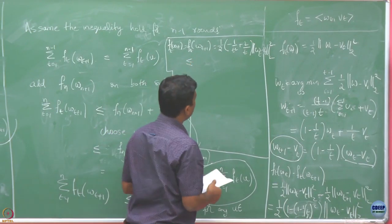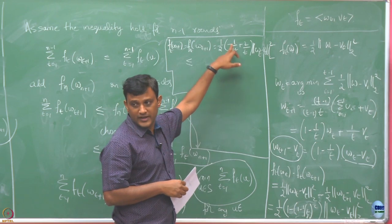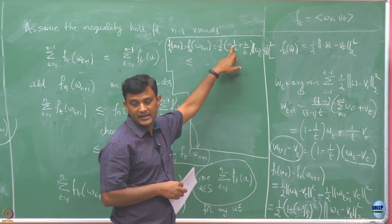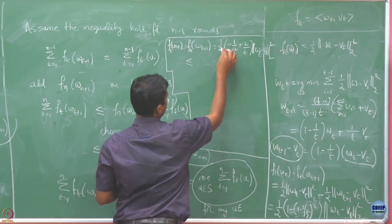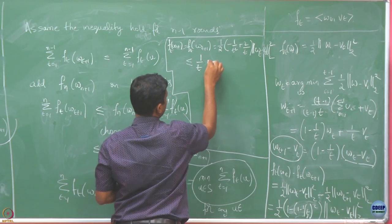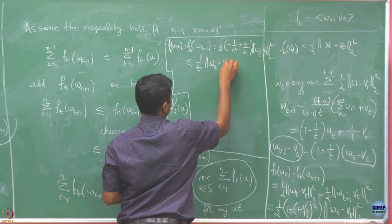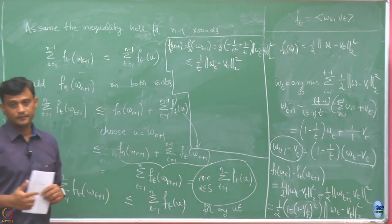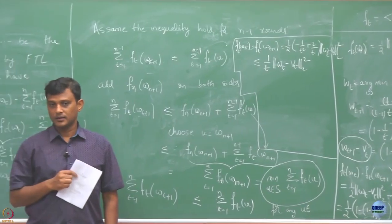What I will do is ignore the 1/T squared term because it has a negative sign. I will ignore that and get an upper bound. That is going to give me 1/T times the norm of W_T minus V_T squared.